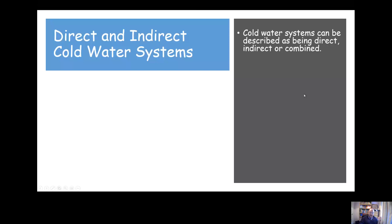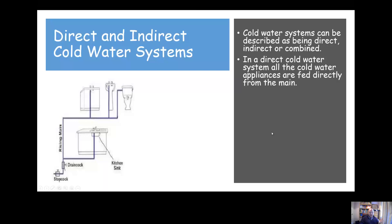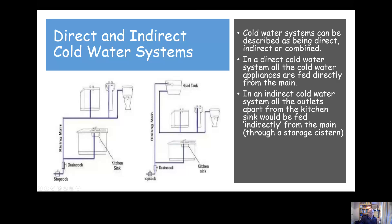Cold water systems can be described as being either direct, indirect, or combined. In a direct cold water system, all of the cold water appliances are fed directly from the mains — that pipe would be described as the supply pipe because it's coming straight from the mains. In an indirect cold water system, all the outlets apart from the kitchen sink would be fed indirectly from the mains.